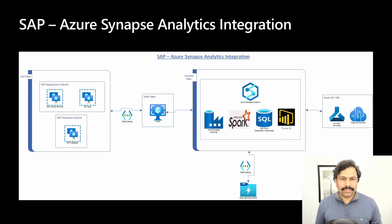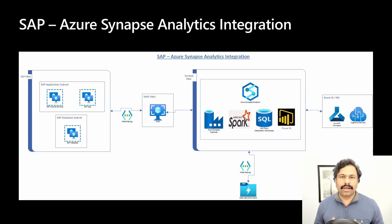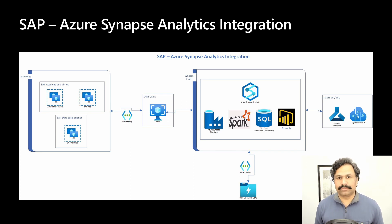This slide shows the end-to-end architecture for the SAP and Azure Synapse Analytics integration. On the left-hand side, you can see SAP is installed in an Azure customer subscription, or it can also be installed in an on-premises network or other cloud platforms such as AWS. In order for Azure Synapse Analytics to connect to SAP and ingest the data into Azure Data Lake Storage, you need to install SHIR — Self Hosted Integration Runtime — which you can install on either physical or virtual machines. As SAP is installed in the Azure cloud, SHIR can connect to SAP using VNet Peering (virtual network peering), allowing data to be transferred securely from within the Microsoft backbone network.